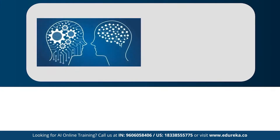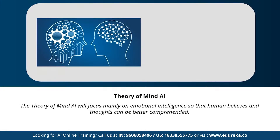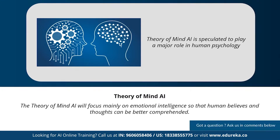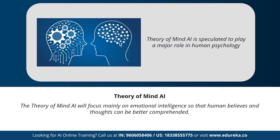Next, we have theory of mind artificial intelligence — a more advanced type. This category is speculated to play a very important role in psychology. This type of AI will mainly focus on emotional intelligence so that human beliefs and thoughts can be better comprehended. The theory of mind AI has not been fully developed yet, but rigorous research is happening in this area.